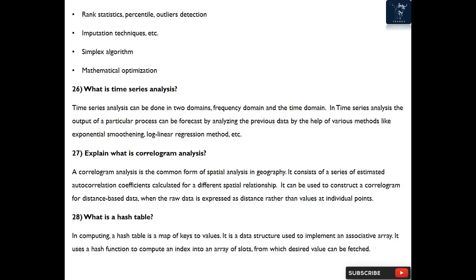Question 27: Explain what is correlogram analysis? A correlogram analysis is the common form of spatial analysis in geography. It consists of a series of estimated autocorrelation coefficients calculated for different spatial relationships. It can be used to construct a correlogram for distance-based data when the raw data is expressed as distance rather than values at individual points.